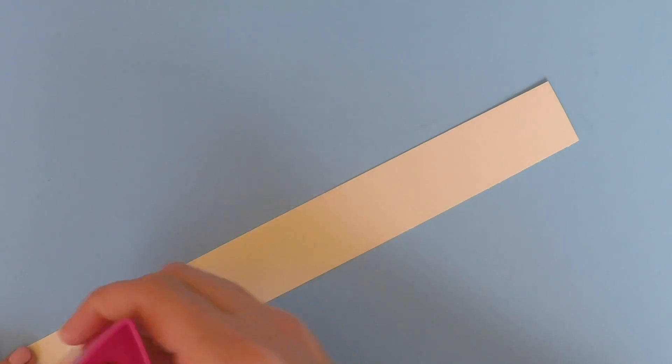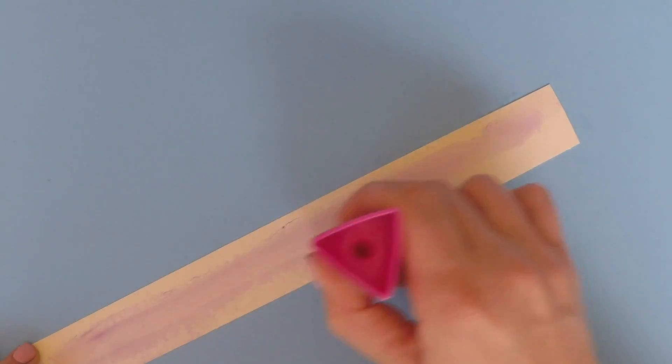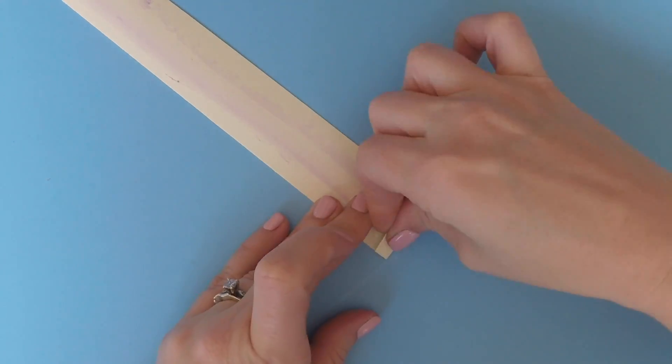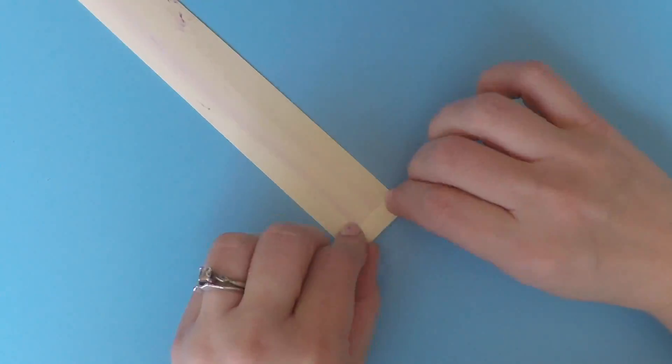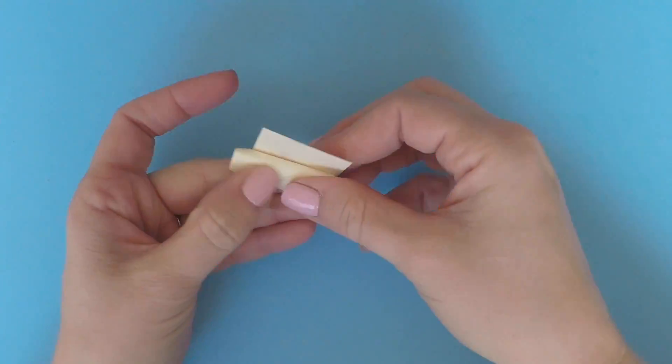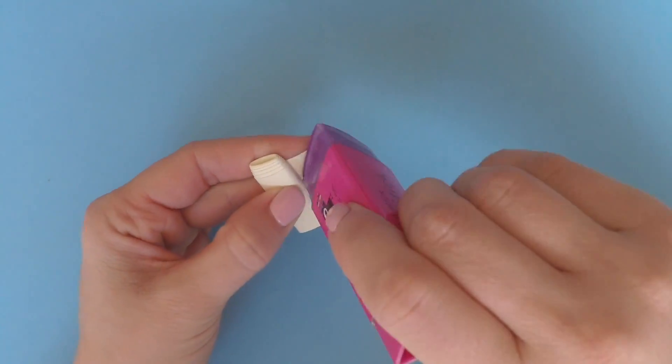Start by taking a strip of paper about an inch wide, apply glue, and fold it up. You're just going to roll it as tightly as you can. Make sure you secure the end.